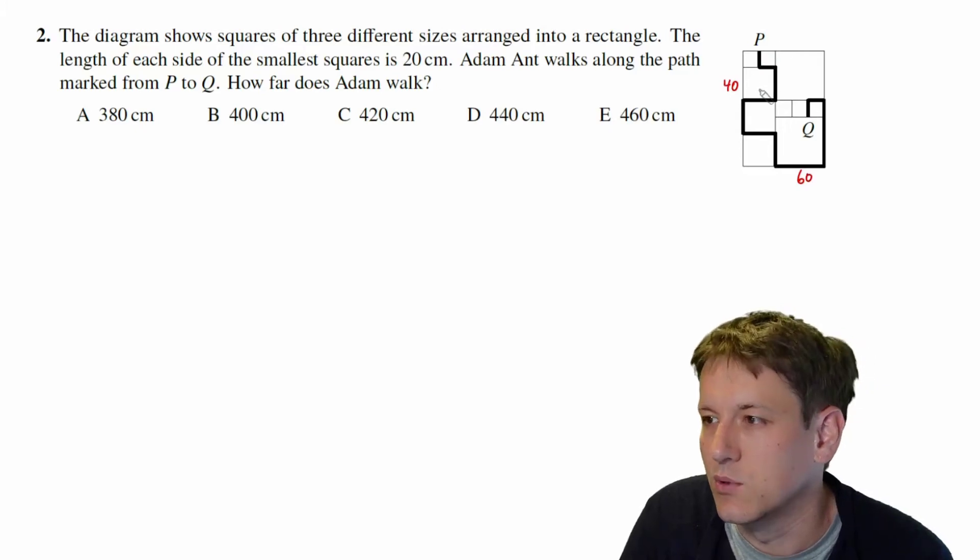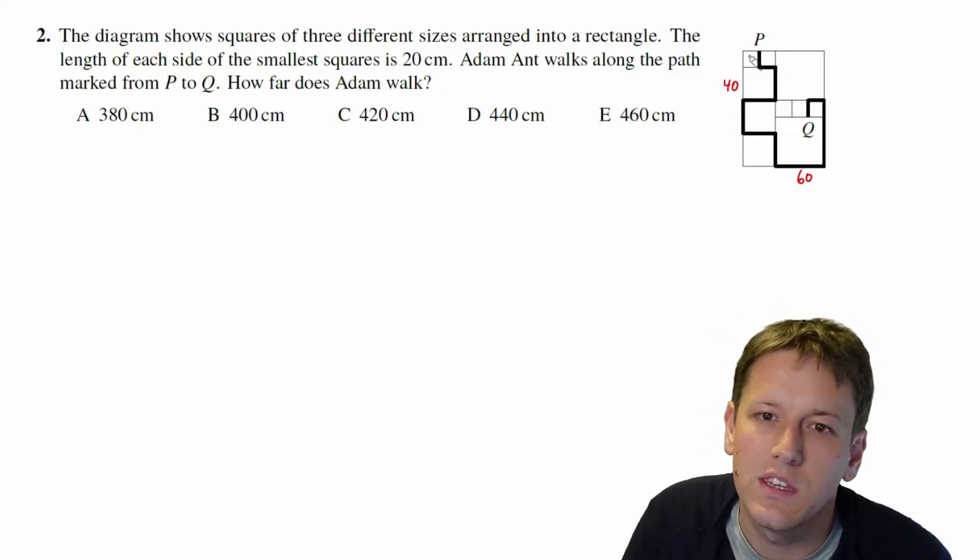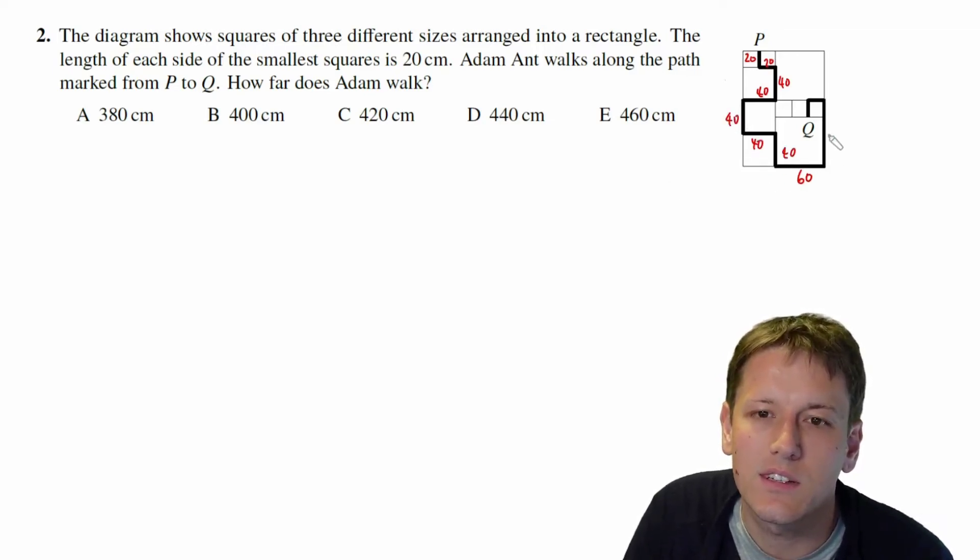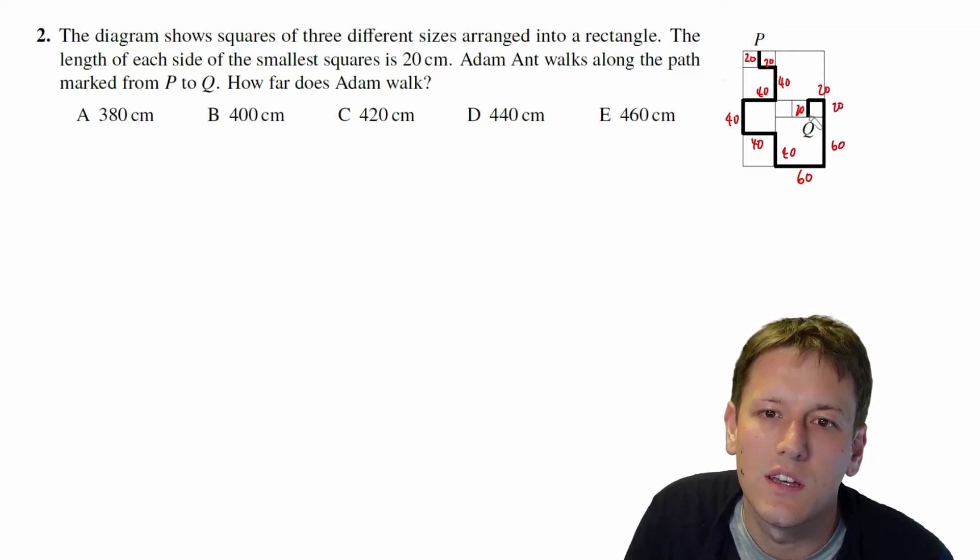So we can go through this whole path either just counting up how many small squares there are in total and times by 20, or I could add together the individual parts on the path. So I've got a 20 here, 20 going across, 40 going down, 40 going across here, another 40 going down, 40 going across, 40 going down, 60 across, 60 up, and then I've got 20, 20, and 20.